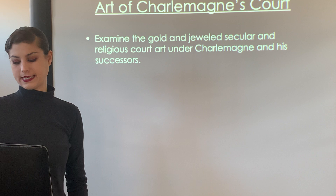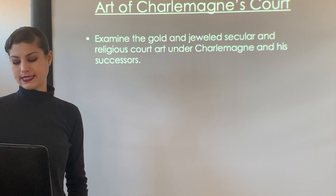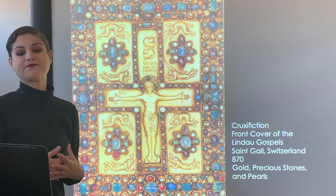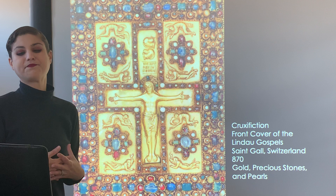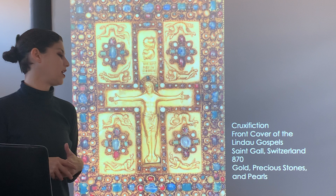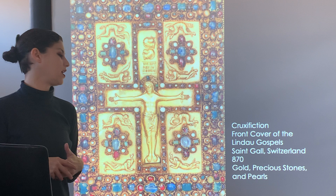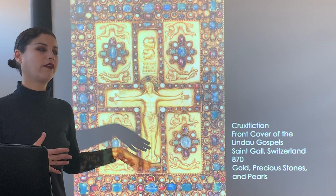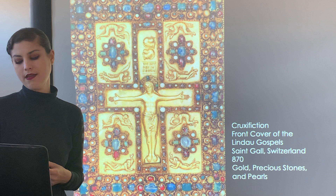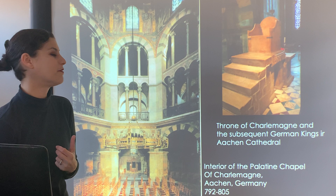Examining the gold and jeweled secular and religious court under Charlemagne and his successors — we've got the crucifixion that was the front cover of the Lindau Gospels. Imagine this as a front cover to a book — incredibly elaborate, bejeweled with inlays of precious and semi-precious stones. Christ on the cross here is very stoic, depicting strength — not really a suffering Christ, but a Christ that represents strength. We are looking at images of Christ with more of a suffering component that tap into a different kind of emotion, and the changing image of Christ throughout the medieval time is something that's noteworthy.